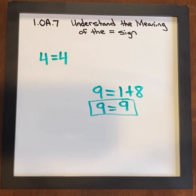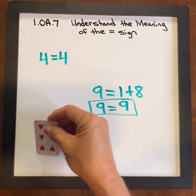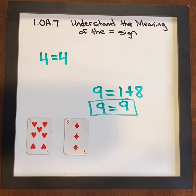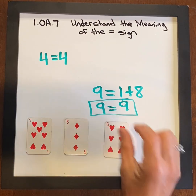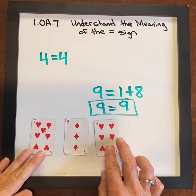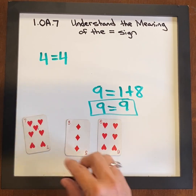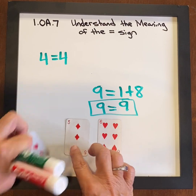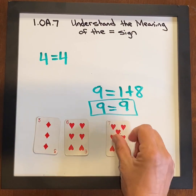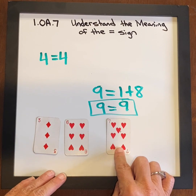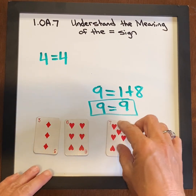I would practice this with the whole class. This is a great number talk, or just a great talk about digits. So we have a 7, a 3, and a 6. Can we make a true equation out of this? Well, I know that 3 plus 6 equals 9, so that won't work, because that's a 7.